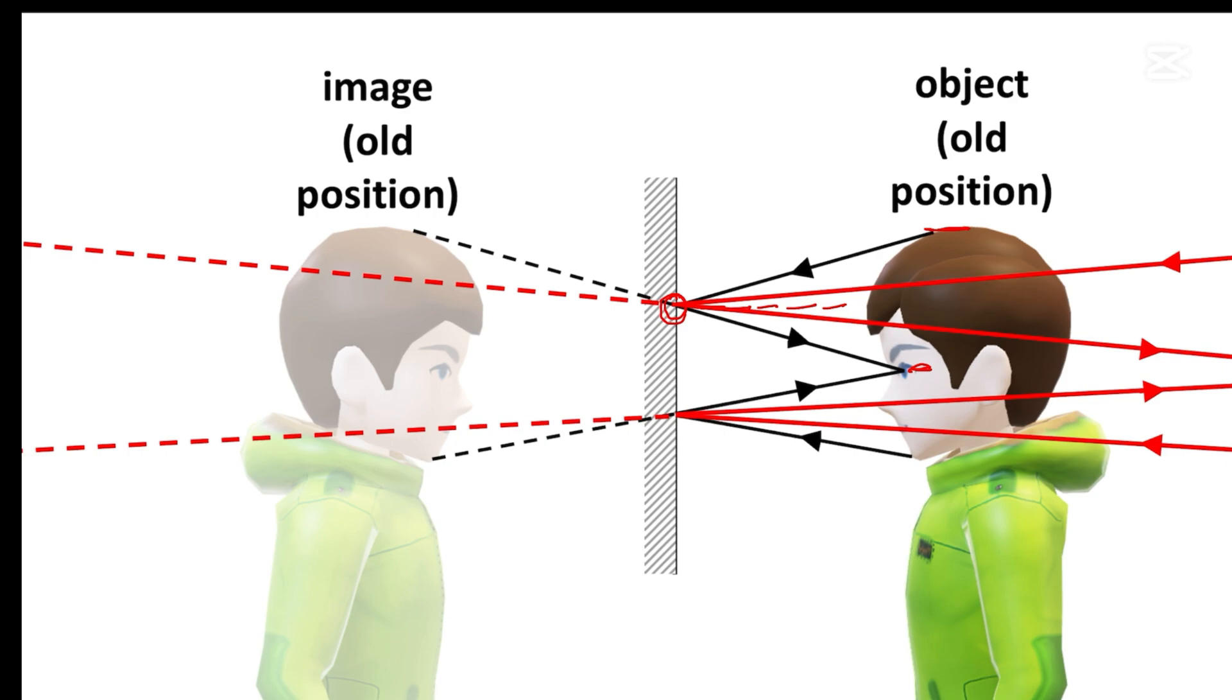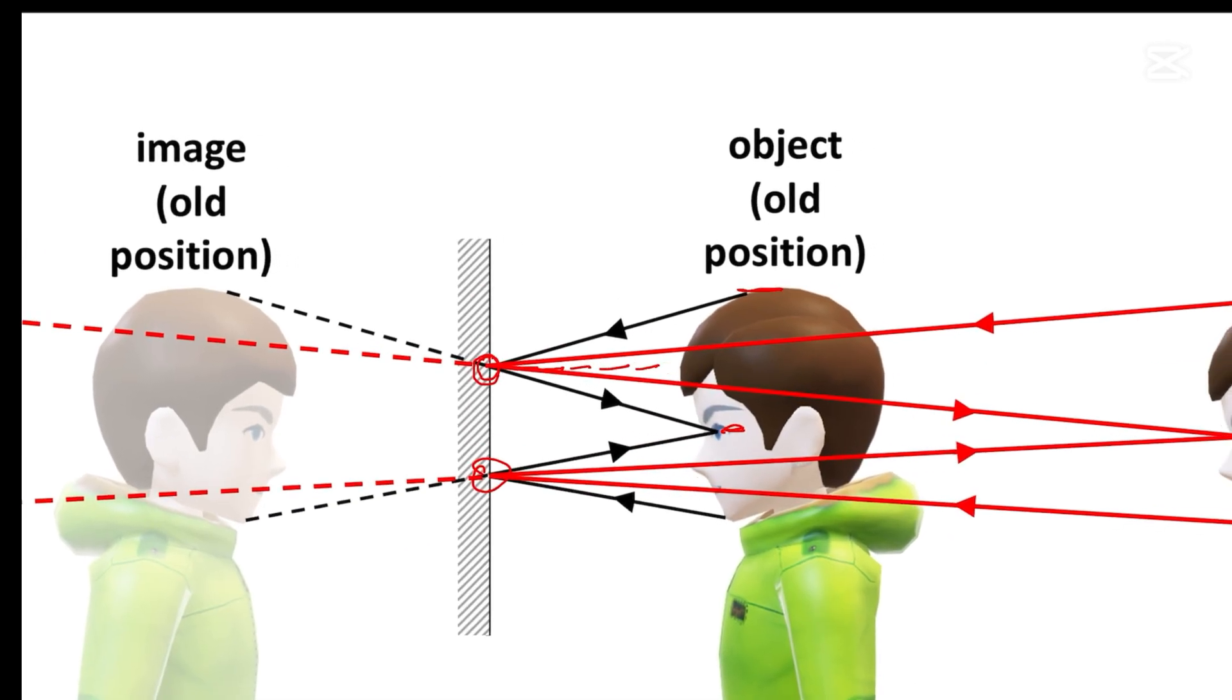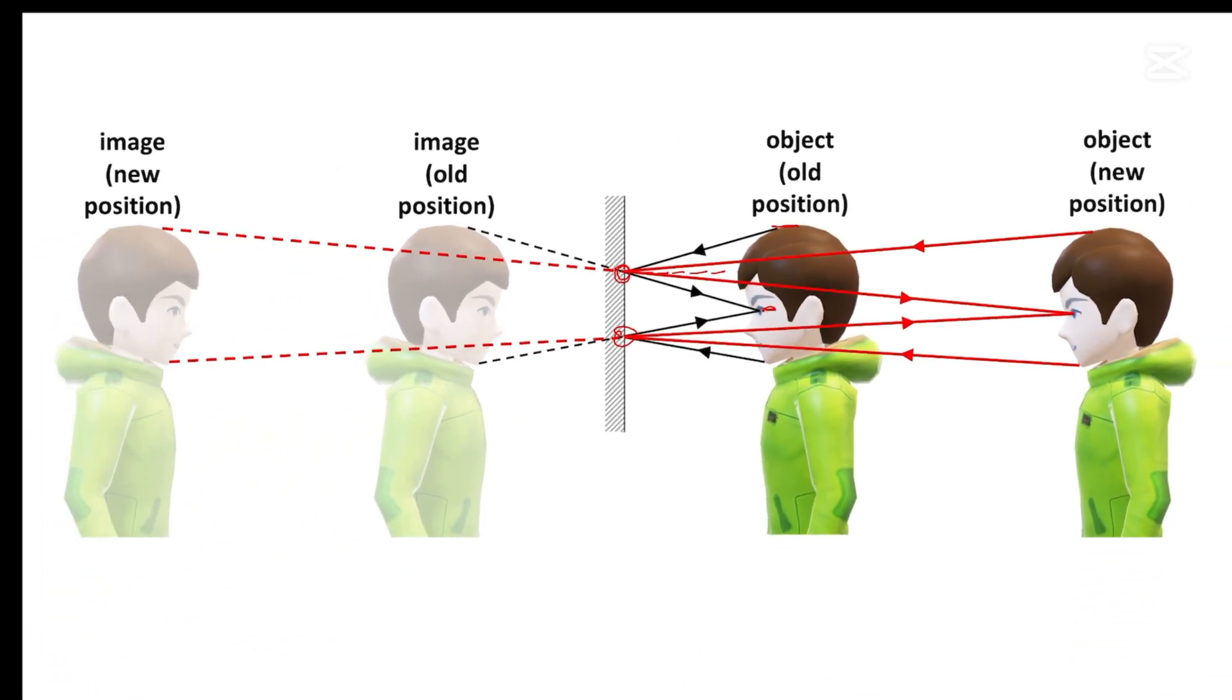And that goes the same for the distance between his chin and his eye. And that is why no matter what his distance is in front of the mirror, the light rays always hit the same point on the mirror, which is the midpoint between his chin and his eye and the top of his head to his eye.